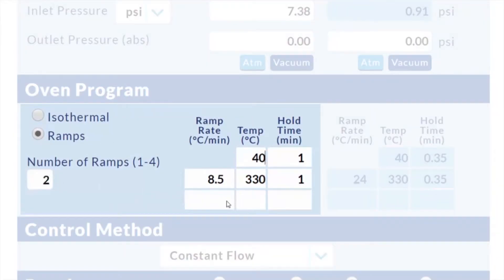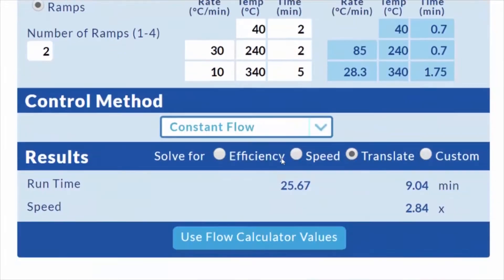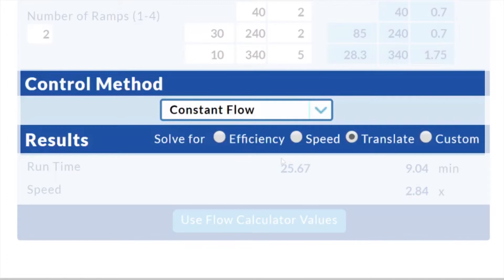Enter your current oven program. Make sure the control method is correct and the default radio button, translate, is selected.